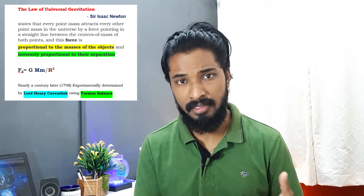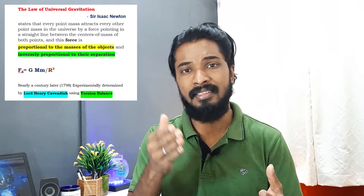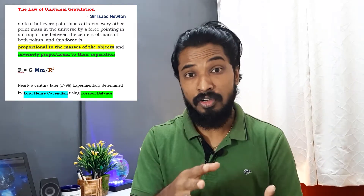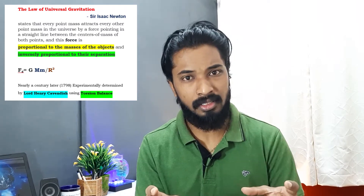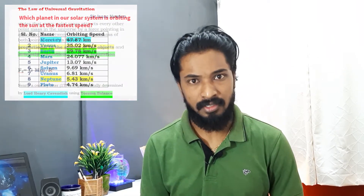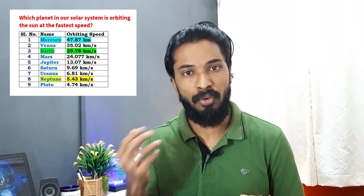What does this law say? Between two objects of any mass, there exists a force of attraction. The magnitude of force of attraction between these two objects depends on their masses and the distance between their centers. More precisely, if the objects have more mass, the force of attraction will be more; and if the distance between the centers of these objects is more, the magnitude of force is going to be less.